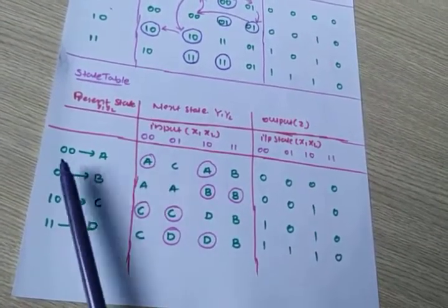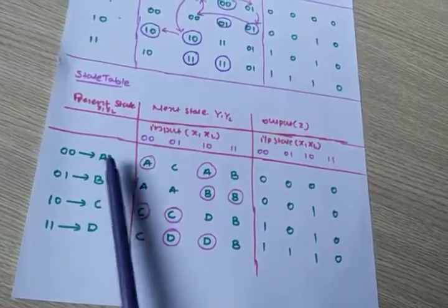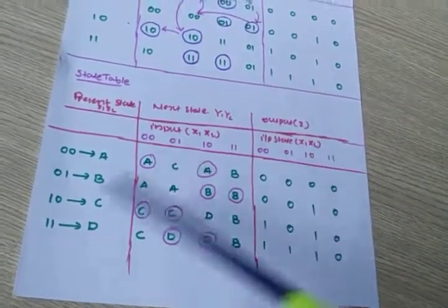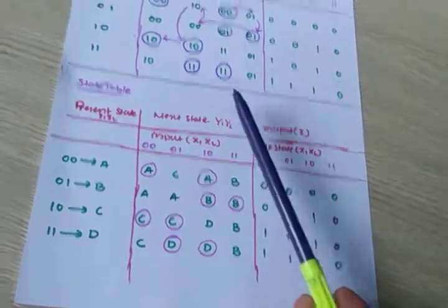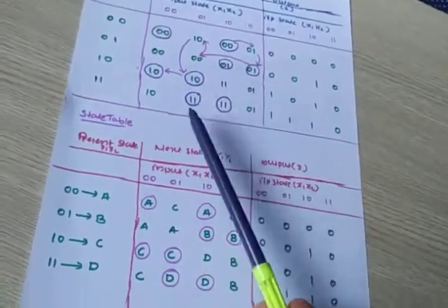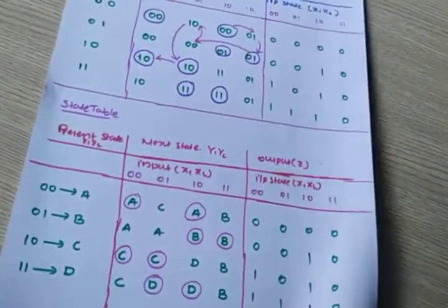For simplicity, we convert these binary numbers to states — A, B, C, D. And where there are circles here, you can just put the circles. That's about the state table.